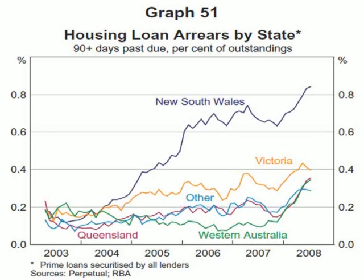You may want to go back to Bubble 25 and look at the graphs of capital city house price movements, especially for Sydney, and consider the default rate data in that context. It will be very interesting to see how these data unfold going forward.